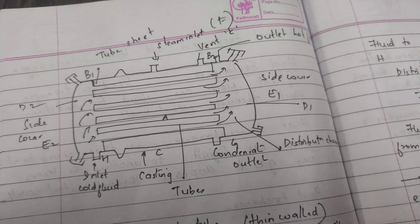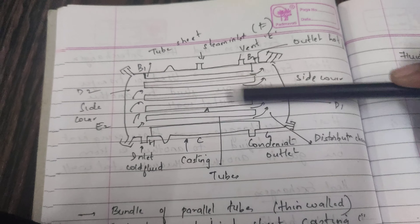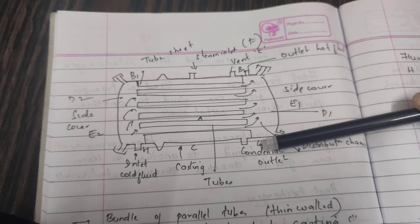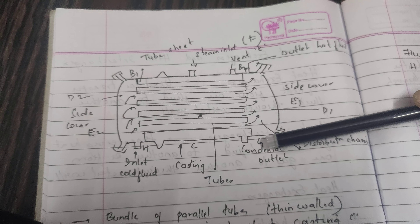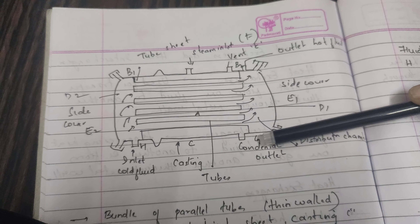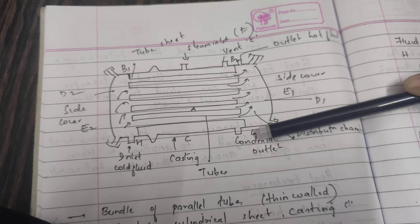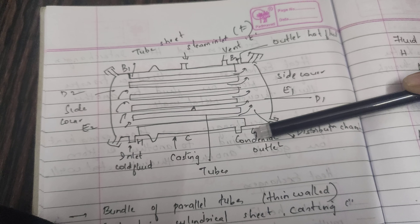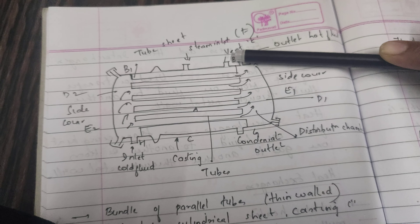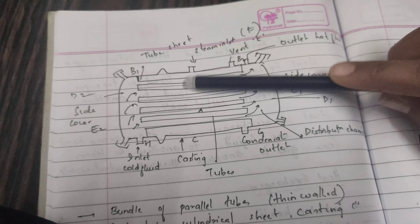There is one inlet and one outlet for steam, and another inlet and outlet for the fluid. F is the inlet for steam, G is the condensate outlet for steam, K is for non-condensed vapor, and H is the inlet for the cold fluid.